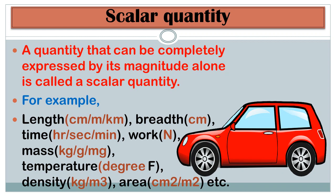For example, the length of a tunnel is 2 kilometers. And body temperature, if you have a fever, is expressed as 101 degrees Fahrenheit. These are examples of scalar quantities.